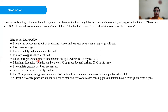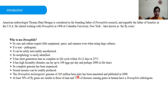It has a short generation time, completing its life cycle within 10 to 12 days at 25 degrees Celsius. Female flies have high fecundity, laying up to 100 eggs per day. The complete genome of Drosophila is known and annotated, available in public databases. The Drosophila genome has about 165 million base pairs, and 50% of fly genes are similar to humans, while 75% of disease-causing genes in humans have their Drosophila orthologues.